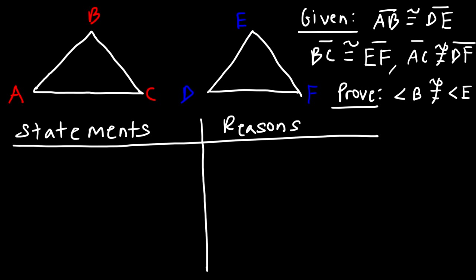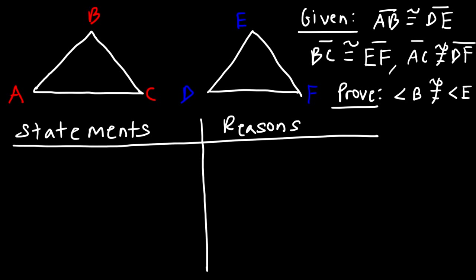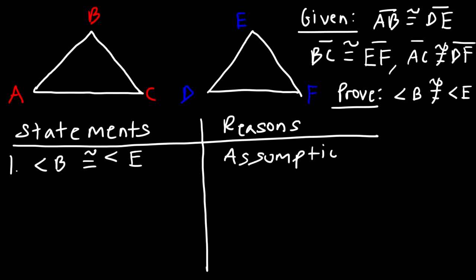When dealing with an indirect proof, the first statement you should make should be a negation of the conclusion — a negation of the statement you're trying to prove. We're trying to prove that angle B is not congruent to angle E, so we're going to assume that angle B is congruent to angle E, and the reason is that it's an assumption.